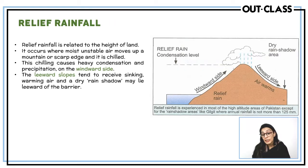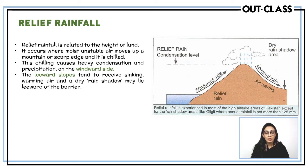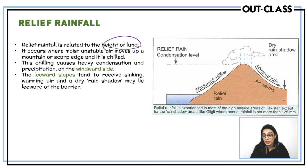Relief rainfall is only attributed to areas where there are mountain regions. It is related to the height of the land — the higher the land, the more likely relief rainfall occurs. It happens where moist, unstable air moves up a mountain or an elevated edge, and where it gets chilled, causing heavy condensation and precipitation on the windward side.